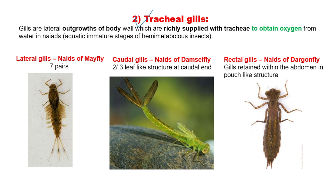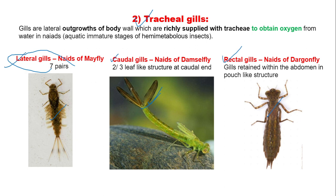Tracheal gills: these are gills which are richly supplied with trachea to obtain oxygen from the surrounding water in nymphs of Odonata and Ephemeroptera. The nymph of mayfly contains seven pairs of lateral gills. The nymph of damselfly contains two or three leaf-like structures at the caudal ends known as caudal gills. In dragonfly nymphs, the gills are retained within the abdomen in a pouch-like structure known as the rectum, and the gills are known as rectal gills.